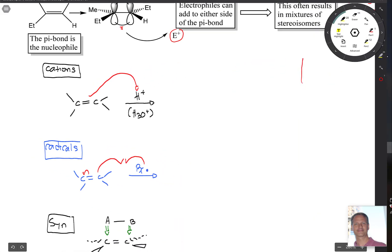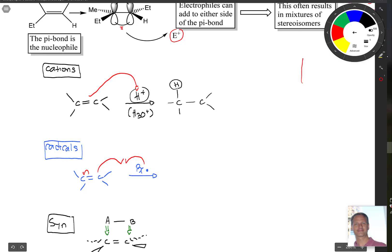For cation-type reactions, the carbon-carbon double bond grabs hold of an electrophile. What you get in the end is a carbocation — a carbon chain with an H that's been added and a positive charge. That's the first type of reaction.